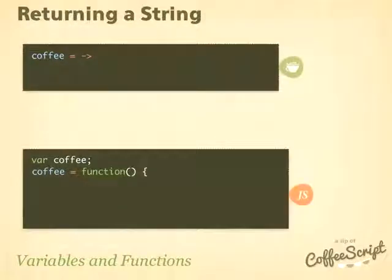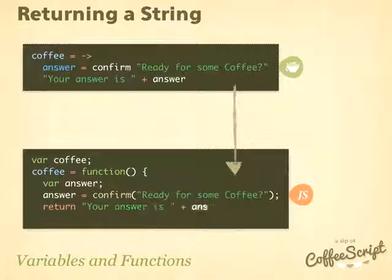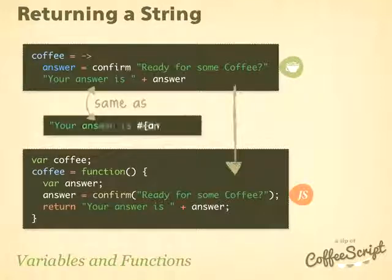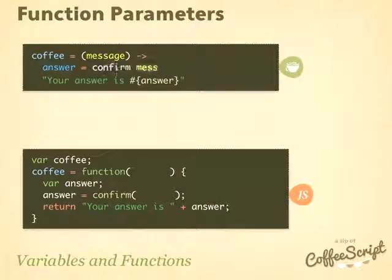Here we have a CoffeeScript function that creates a confirm box and then returns 'your answer is' whatever the answer is. The JavaScript it generates shows the return that got added. The return value in CoffeeScript can be written in a better way using an interpolated string — 'your answer is answer' — and it gets converted to the same JavaScript using string concatenation with the plus operator. To add function parameters, this is how we do it in CoffeeScript, and this is the JavaScript it generates.